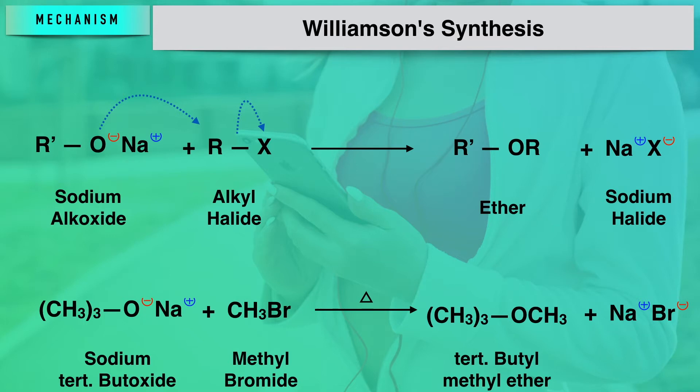If you want to prepare a symmetrical ether, the R group in the alkyl halide and the alkyl group attached within the alkoxide molecule should be the same, which will result in the formation of a symmetrical ether.